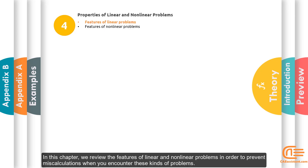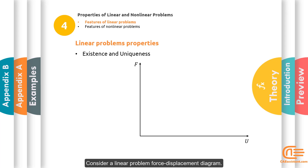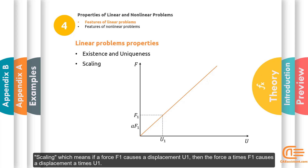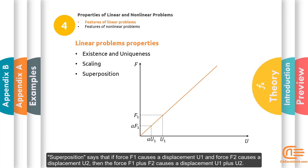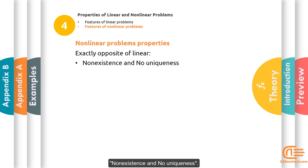In this chapter, we review the features of linear and nonlinear problems in order to prevent miscalculations when you encounter these kinds of problems. A linear problem has the following features. Existence and Uniqueness: consider a linear problem force-displacement diagram. Existence means that for each load F1, there will always be at least one solution U1, while Uniqueness says that the solution is the only solution. Scaling means that if a force F1 causes a displacement U1, then the force F1 plus F2 causes a displacement U1 plus U2. For a nonlinear problem, the features are exactly the opposite of linear ones, which means non-existence and no uniqueness.